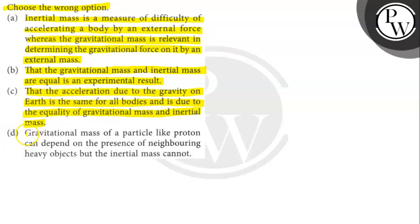Option D says gravitational mass of a particle like a proton can depend on the presence of neighboring heavy objects, but the inertial mass cannot.